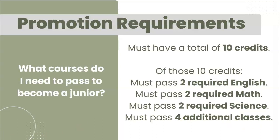Promotion requirements are tied to graduation requirements but are a little different — these are the classes you must pass in order to be promoted to your next grade level. For students in 10th grade who would like to be promoted to 11th grade and become a junior, they need a minimum of 10 credits, which should not be a problem. If they have passed everything they've taken, they will have 16 when they finish this school year. Of those 10 credits, you must have two English classes, two math classes, and two science classes. If a student does not pass one of these classes in the fall semester, please reach out to your counselor so we can talk about options for making up that class, either through a credit recovery course or through summer school.